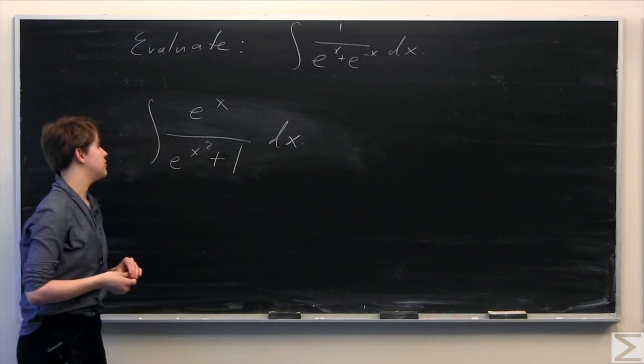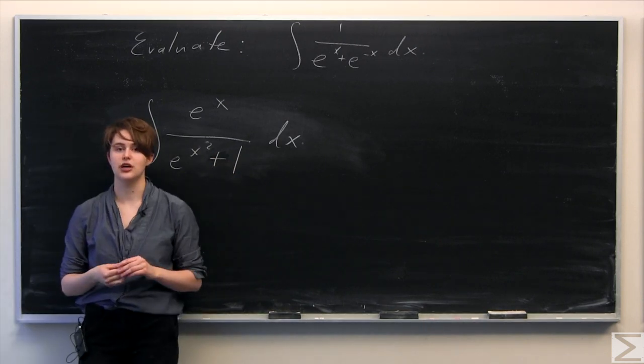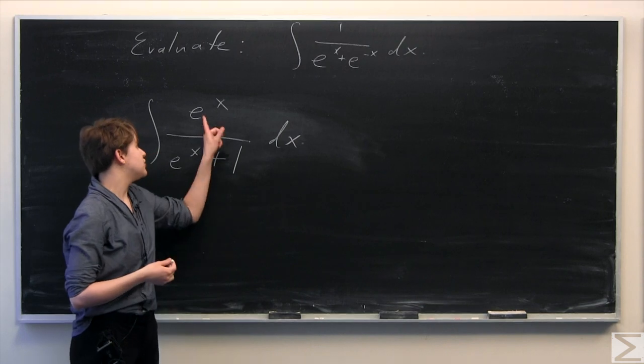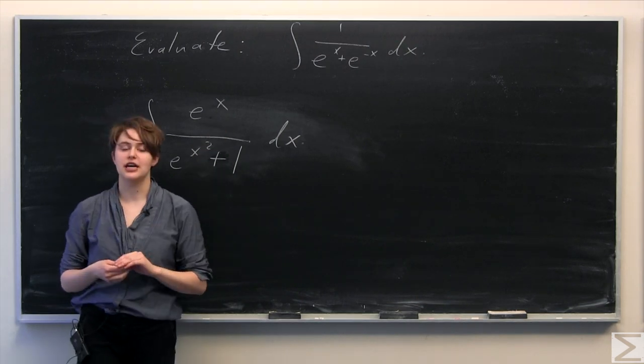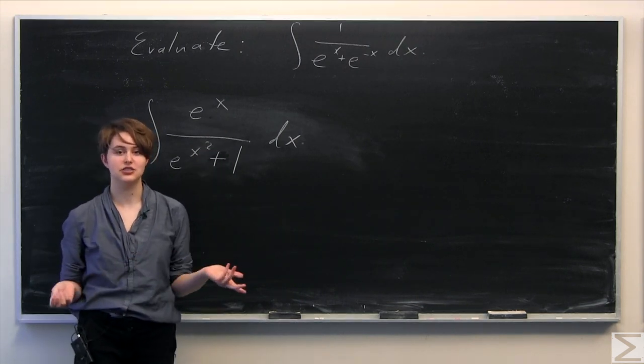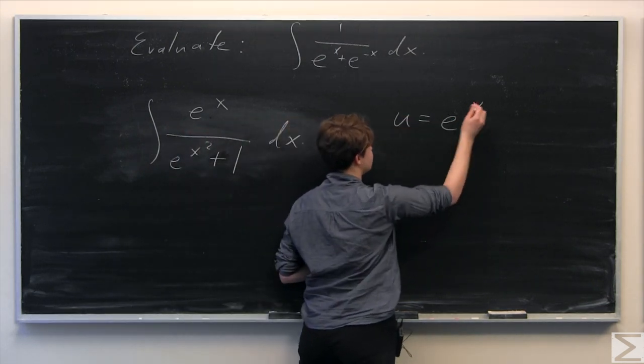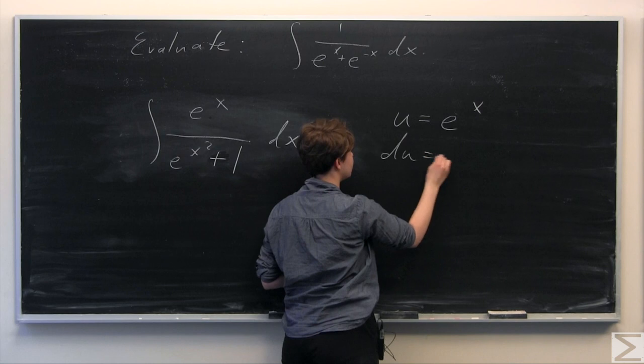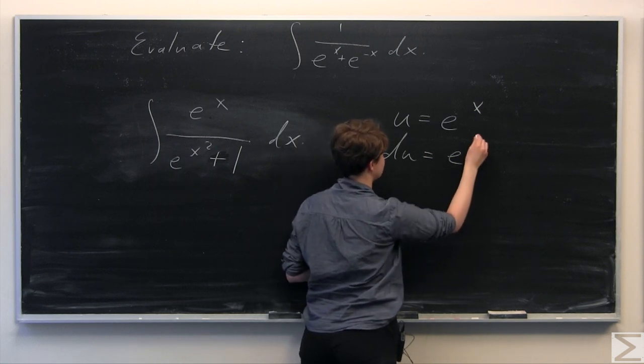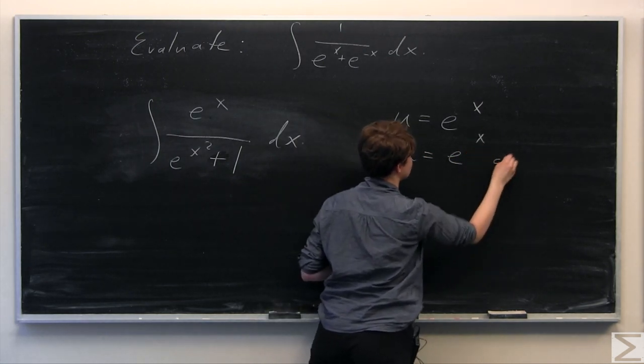Now it looks like a good thing to do would be a u-substitution because we know that the derivative of e to the x with respect to x is just e to the x. So let u equal e to the x, and then du is going to be e to the x dx.